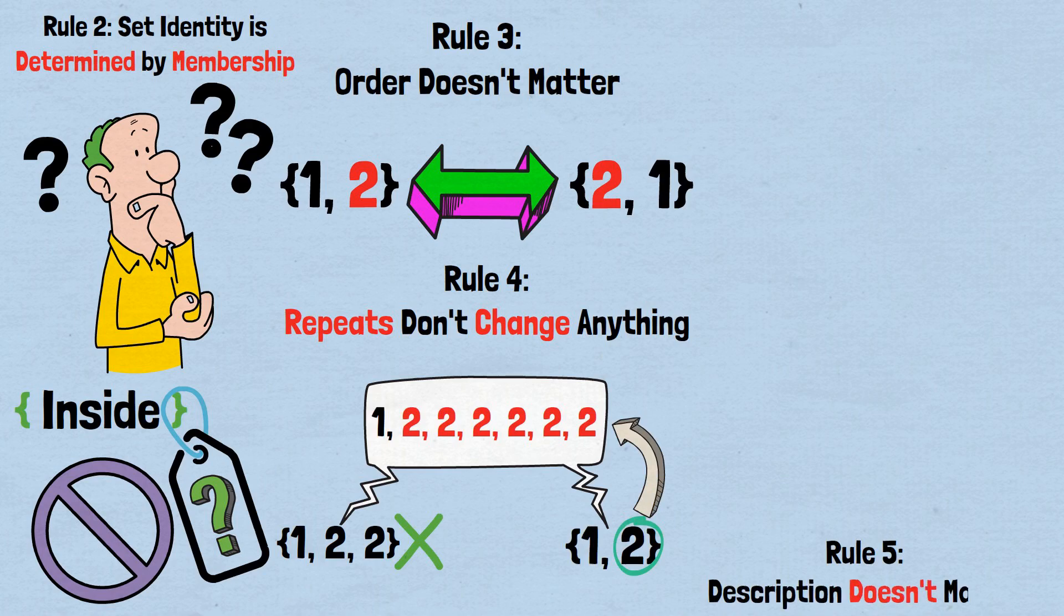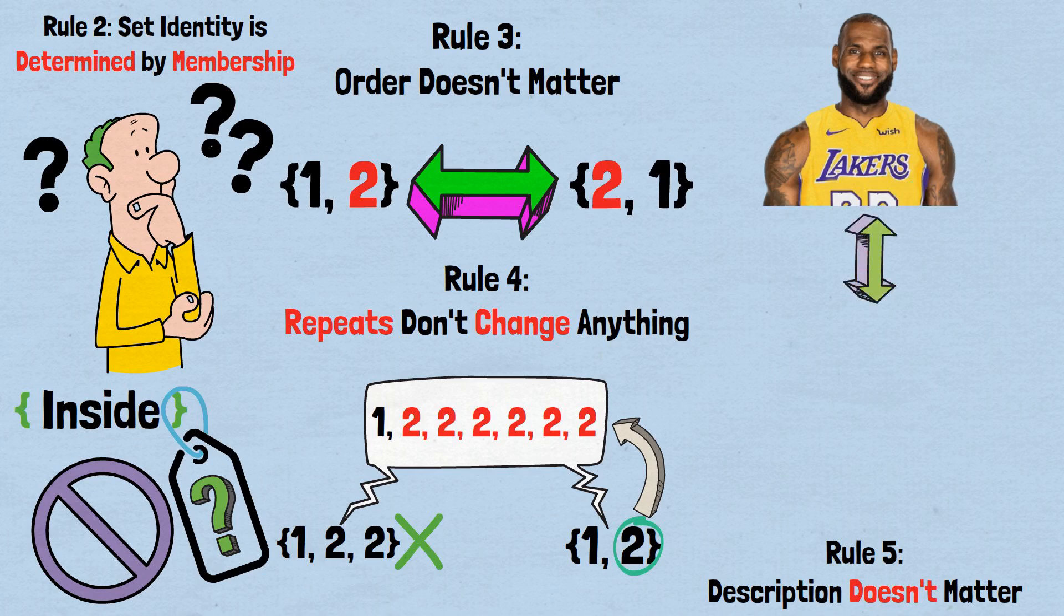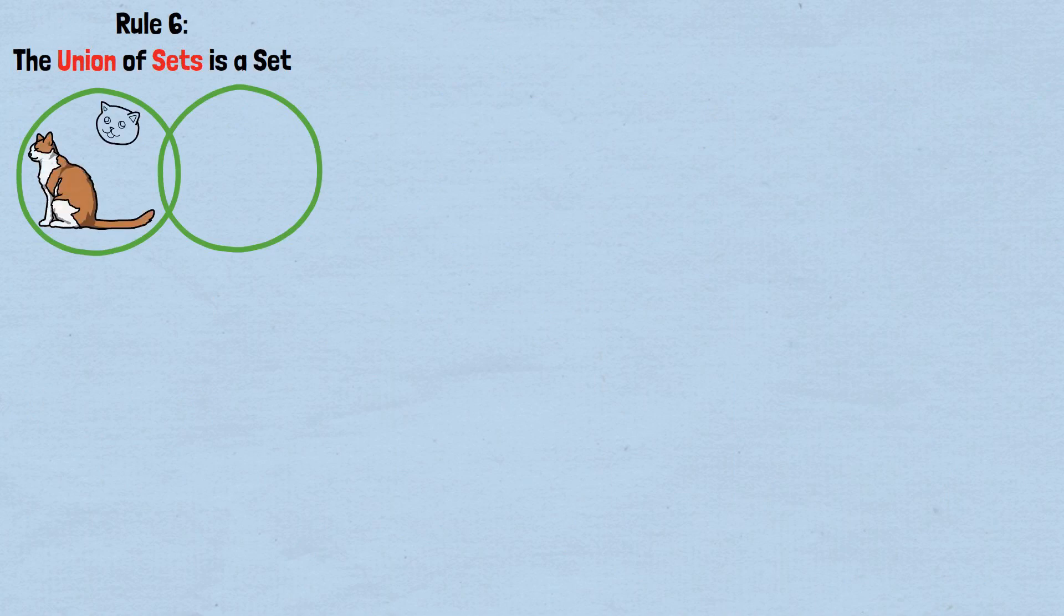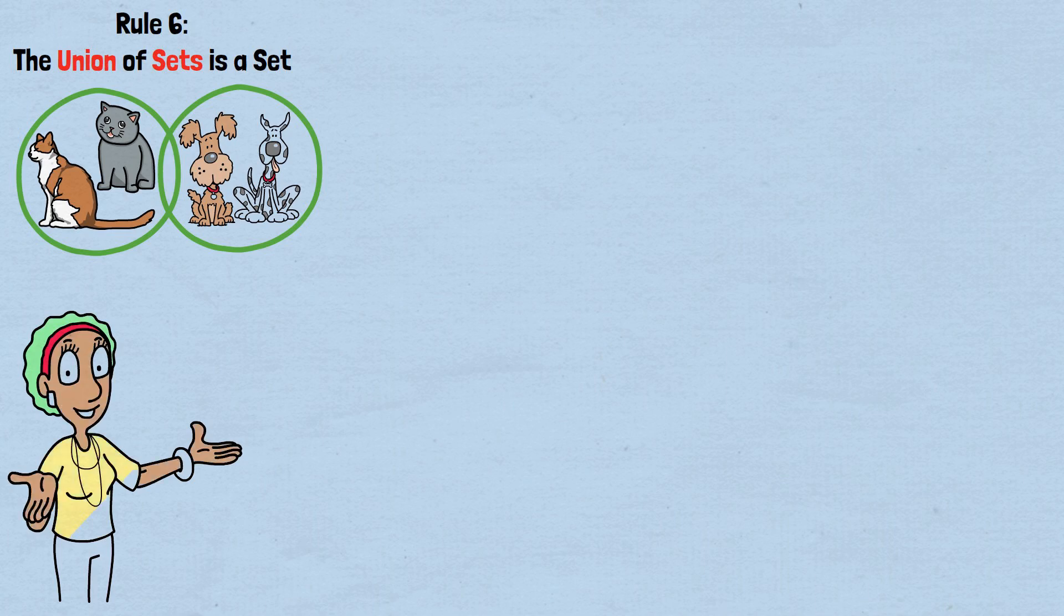Rule five, description doesn't matter. The set containing LeBron James is identical to the set containing the NBA all-time scoring leader, playoffs included. Same person, same set. Rule six, the union of sets is a set. If you combine two sets, like the set of all cats and the set of all dogs, you get another valid set, the set of all cats and dogs.